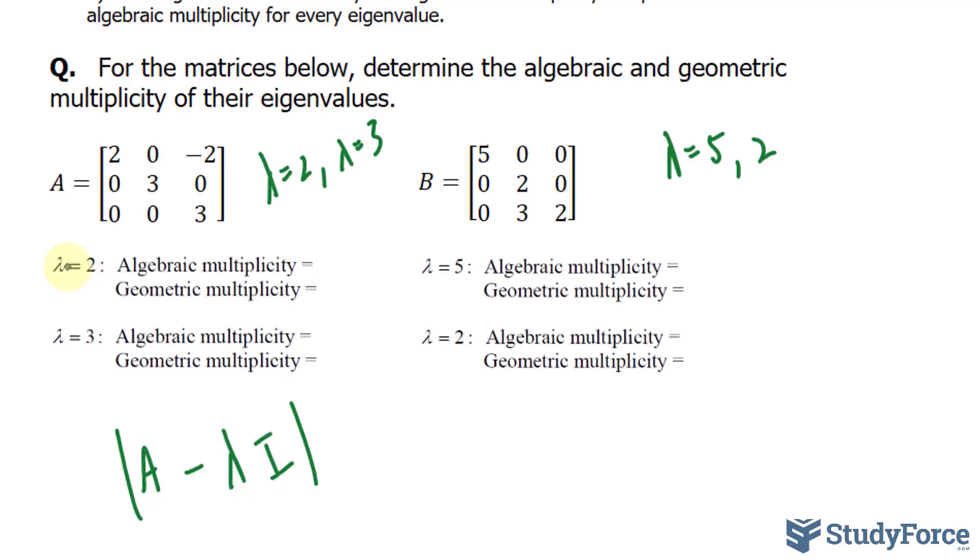For an eigenvalue of 2, the algebraic multiplicity is how many times it repeats. It repeats once and it actually happened to produce one eigenvector. That's the geometric multiplicity. I know that it produces one eigenvector because we did this example in one of our previous videos and we found out that it actually produced one. So I'm referencing that video to assist us filling these out. 3 repeated twice and it produced two vectors.